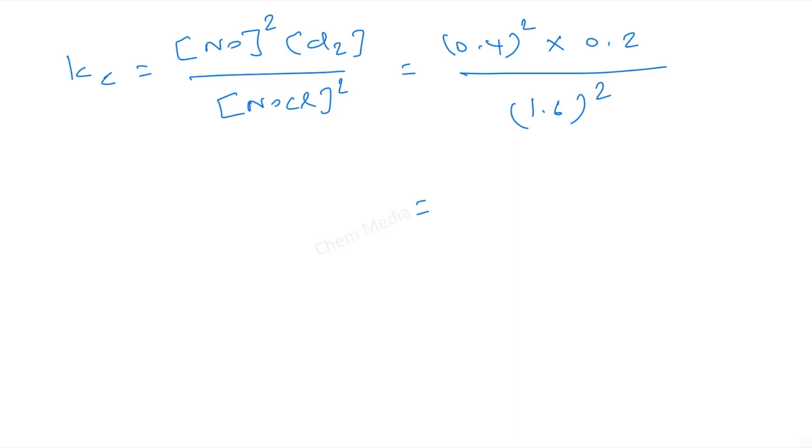Let me write it this way: 4 times 10 to the power minus 1 whole square times 2 times 10 to the power minus 1 divided by 16 times 10 to the power minus 1 whole square. So therefore this will be 16 times 2 times 10 to the power minus 1 divided by 256. So therefore this will be 128, therefore 16 times 8 is 128.